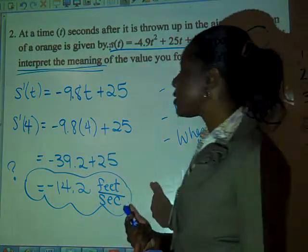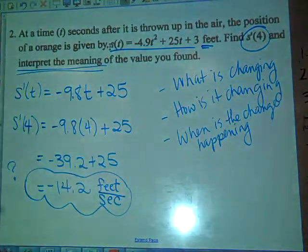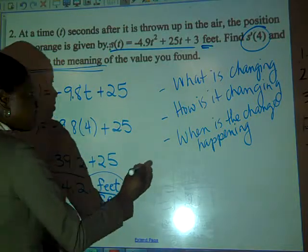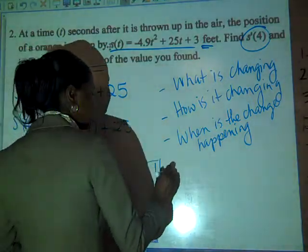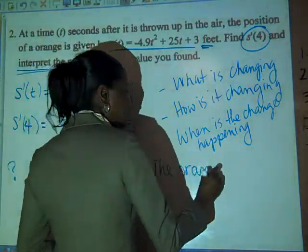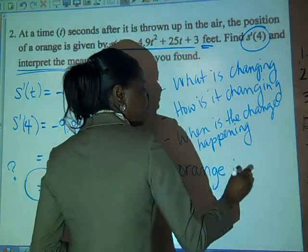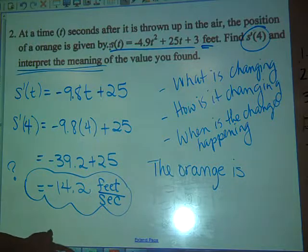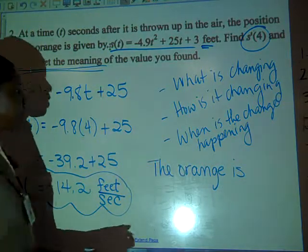How is it changing? And the way you determine how it's changing is by looking at the sign of your answer. Negative. So therefore the orange is what? Going down or falling. That's going to tell me it's negative. So that's what I'm going to say. The orange, that's what's changing. The orange. And how is it changing? It is falling or going down.